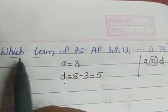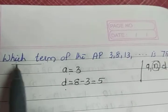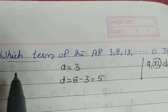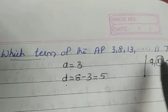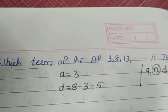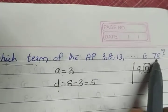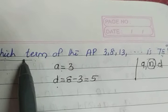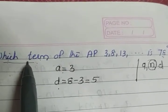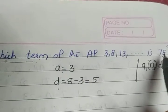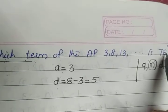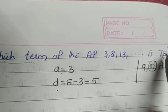Again, read the question. Which term? Which term means we have to specify the term in which 78 belongs. The position of the term 78, that means we have to find the value of n. So 78, we have to find the n for which the term is 78.